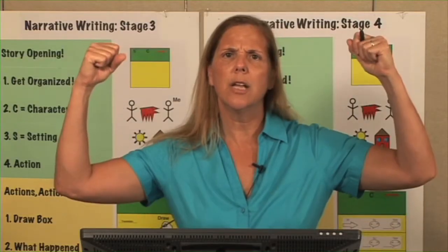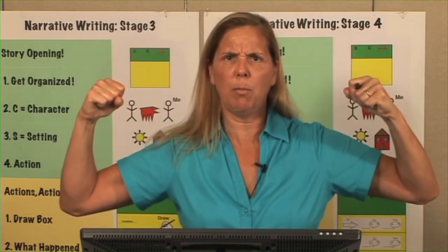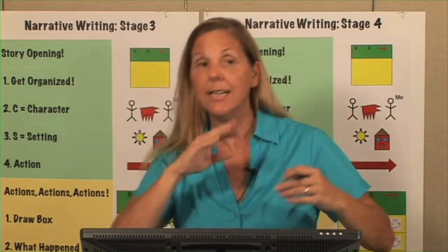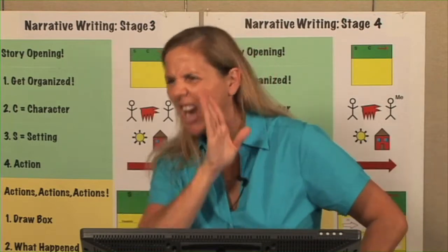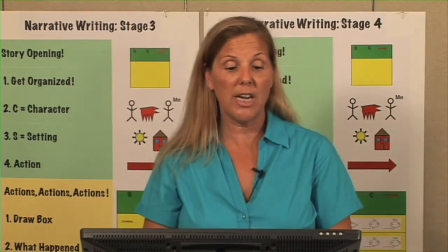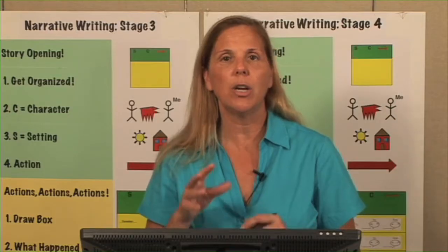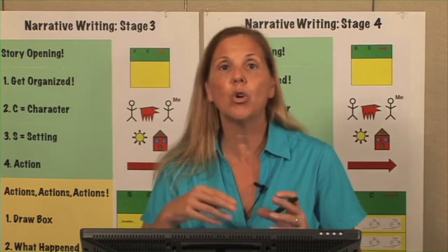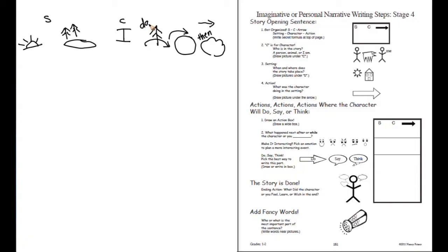Let's go back and add some powerful verbs. That's the most powerful part of speech — everyone knows that. So when we go over here to our actions, instead of saying ran around the tree, what other ways could I do it? Were you crawling around the tree or did you dart around the tree? Darted. So we darted — he darted around the tree.